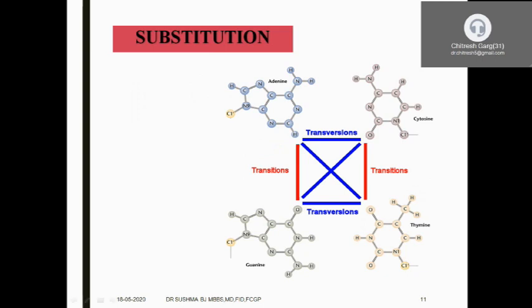Looking at the substitution example: adenine, cytosine, guanine, and thymine. If adenine is replaced by guanine in mRNA — purine replaced by purine — we call it a transition. If cytosine is replaced by thymine — pyrimidine replaced by pyrimidine — that is also a transition. Another type of mutation is transversion, where guanine is replaced by thymine, or adenine is replaced by a pyrimidine, or a pyrimidine is replaced by a purine.